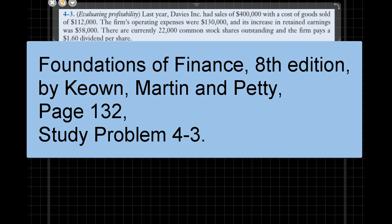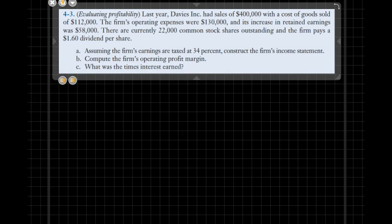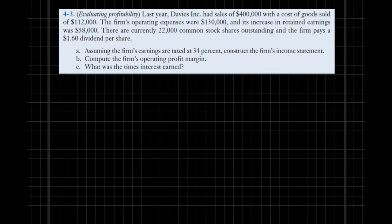We'll now go over study problem 4-3, page 132 from our textbook. Let's first figure out what the givens are. We are provided with sales figures, cost of goods sold, and operating expenses. Besides that, we're also given retained earnings, shares outstanding for the firm, and dividends per share.